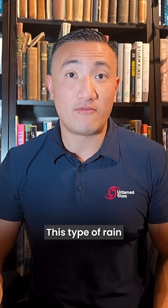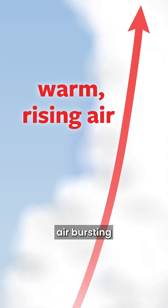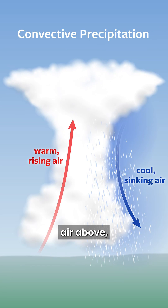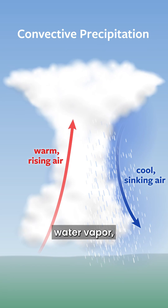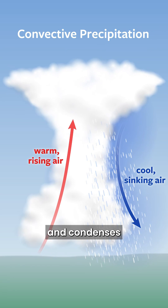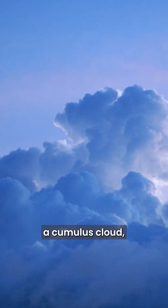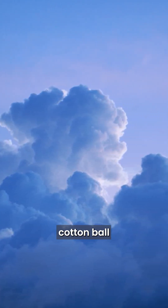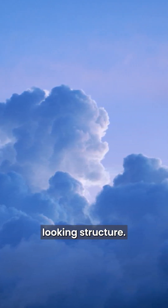This type of rain is called convective rain. The warm air bursting upward through the cooler air above, if it's moist enough and contains enough water vapor, eventually cools and condenses into liquid water, which forms a cumulus cloud — identifiable by its bubbly, cotton ball-looking structure.